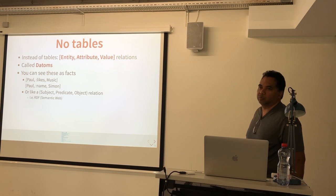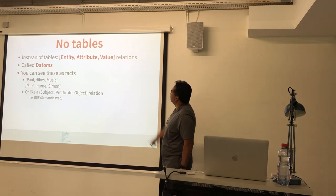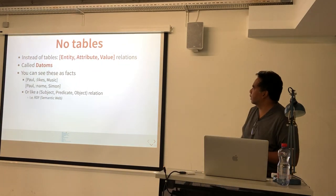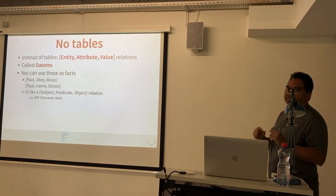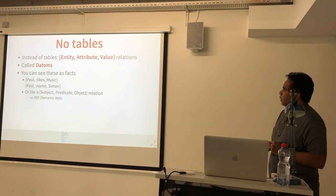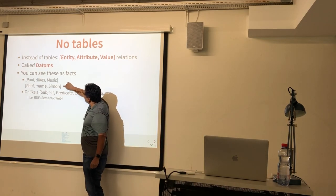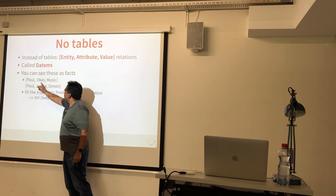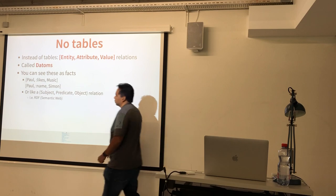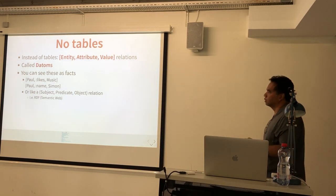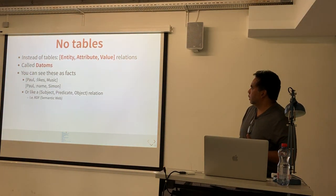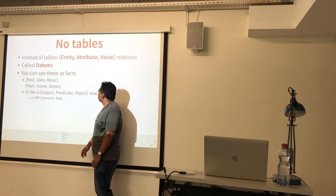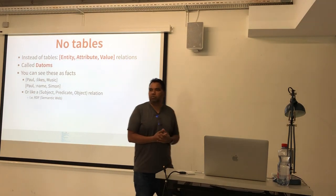Another surprising fact is that there are no tables in Datomic. It uses what are called datoms — they are relations, specifically a triple. The first element is the entity, usually an ID. Then there's the attribute, which describes what the entity is, and the value associated to the entity. It's really just describing facts. For example: 'pod likes pizza' or 'pod's name is Simon.' Everything in the database is just a set of triples. This is the same concept used in RDF and the semantic web, where they use the terms subject, predicate, and object to store facts.